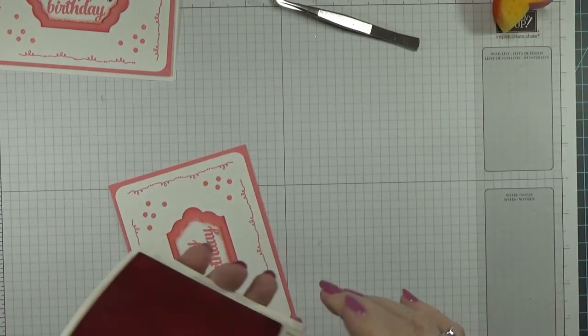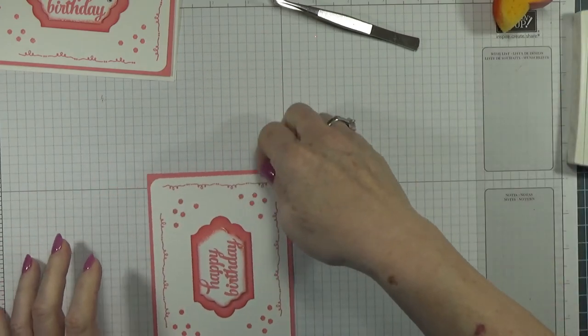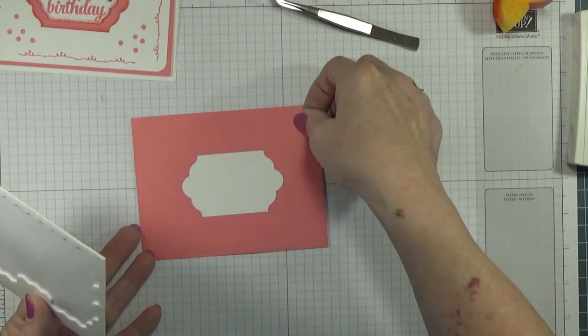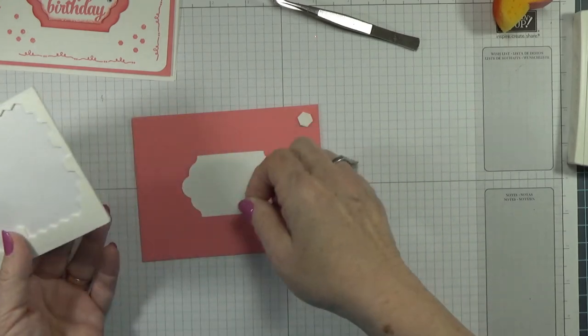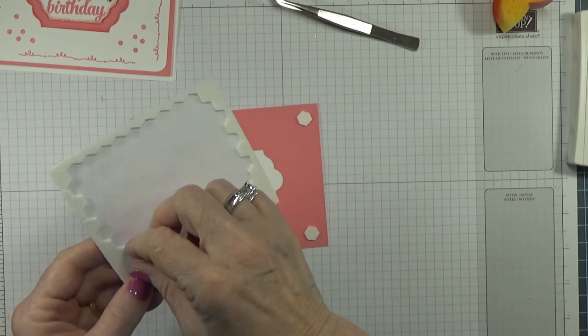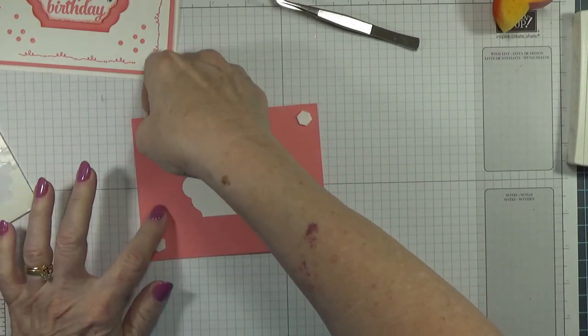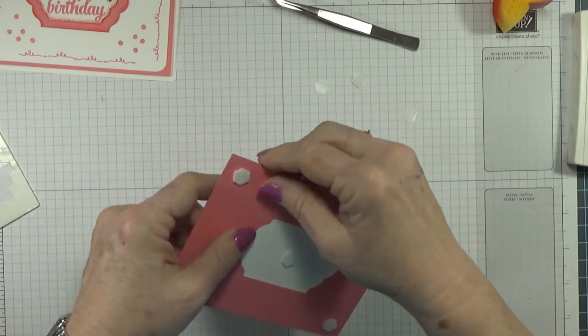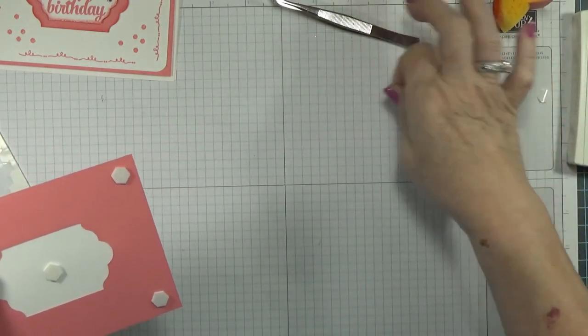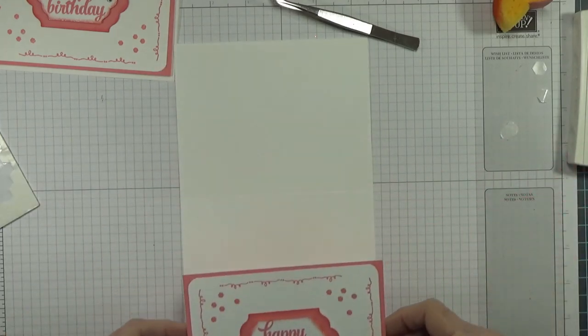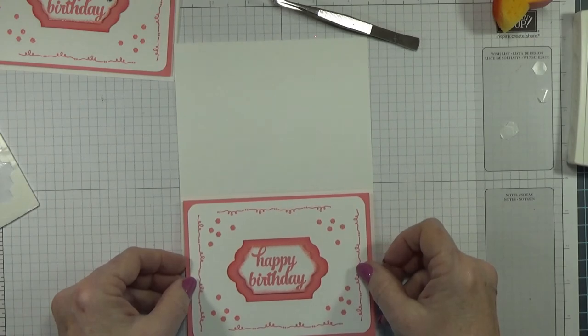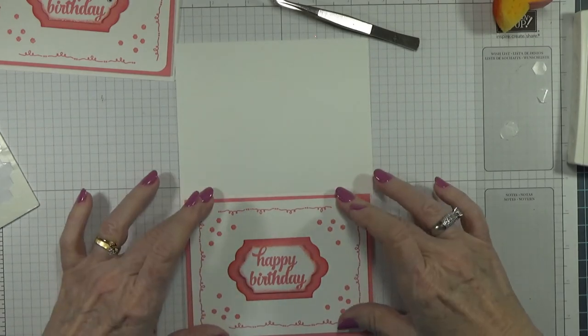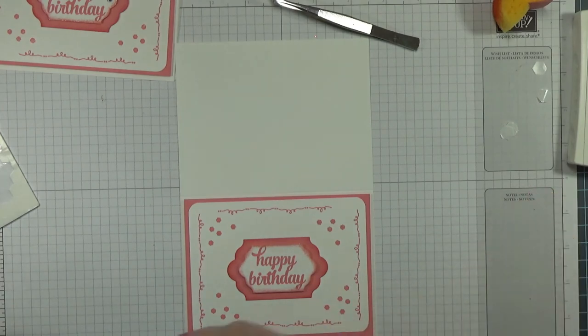Now these I put on dimensionals too, so I'm just going to go ahead and do that. Put one in the middle and one right there. Let me get my base. Let's see if I can get this down straight.